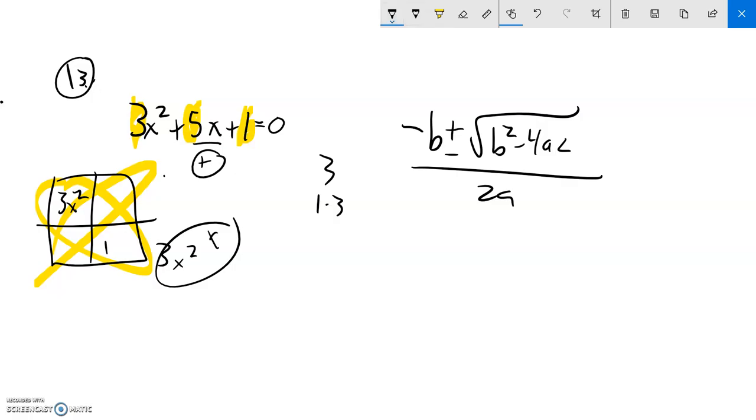So I'm going to substitute those in. Let's see what I have. Negative b plus or minus the square root of b² minus 4 times a times c, all over 2 times a.